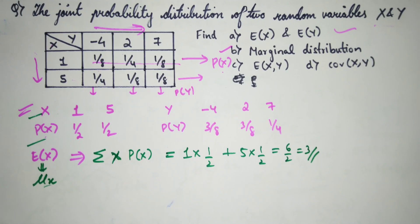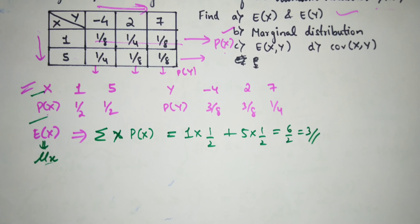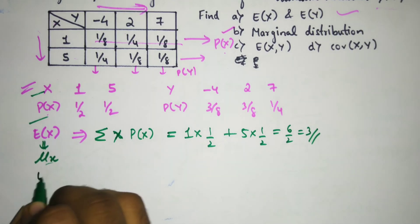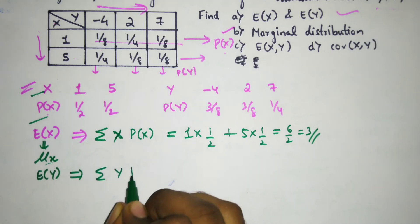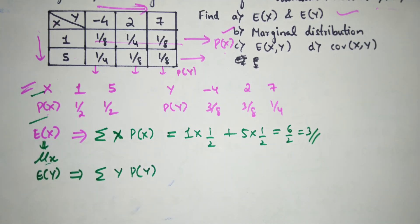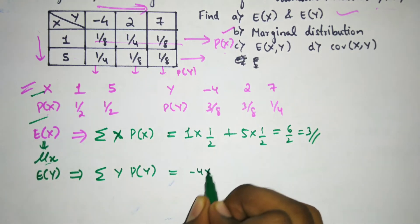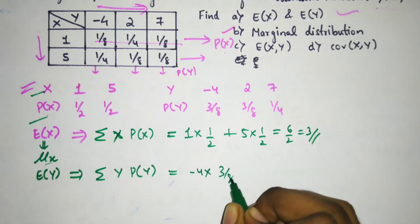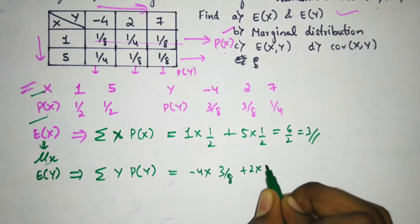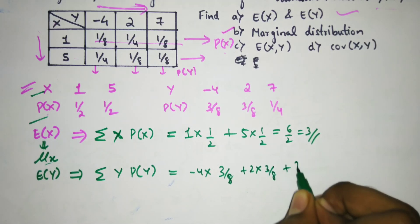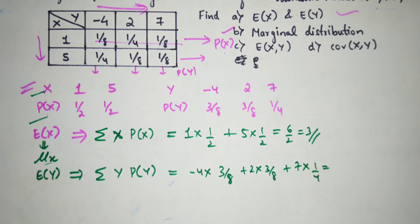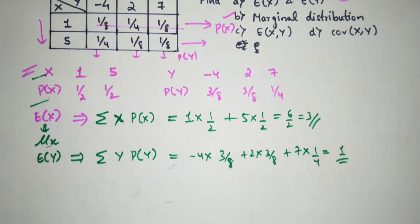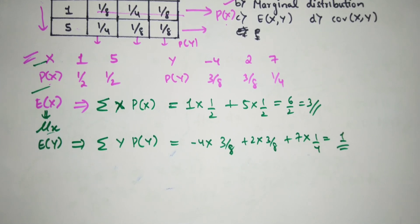For E(Y), the same formula applies but with Y and P(Y): E(Y) = (-4) × (3/8) + 2 × (3/8) + 7 × (1/4). Adding all these terms together gives the answer E(Y) = 1.